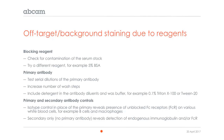For antibody controls, an isotype control substituted in place of the primary antibody reveals the presence of unblocked Fc receptors on white blood cells such as B cells and macrophages. Using a secondary antibody only, without any primary, reveals either endogenous immunoglobulin that the secondary antibody is sticking to, or Fc receptors if the secondary is binding to those on white blood cells.